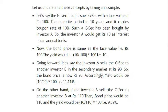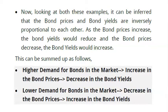At a price of ₹90, the yield becomes (10/90) × 100 = 11.11%. On the other hand, if investor A sells the G-Sec to investor B at ₹110, the bond price would be ₹110 and the yield would be (10/110) × 100 = 9.09%. It is clearly visible that when the bond price increases, the yield decreases. Bond prices and bond yields are inversely proportional to each other.